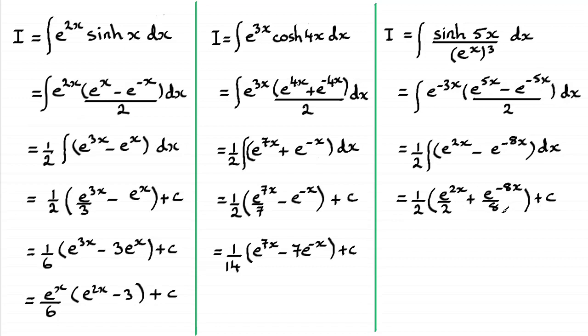And again you could leave it like this, but if we put this all over 8, pulled out 1 8th to join that half, half times 1 8th is 1 16th, made the adjustments inside the brackets to compensate for that. We're going to have 1 16th then of 4e to the 2x plus e to the power minus 8x plus that constant of integration c.